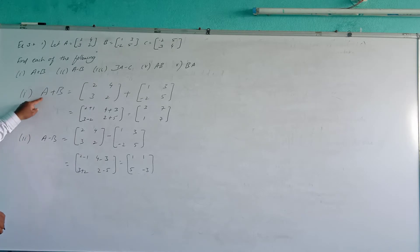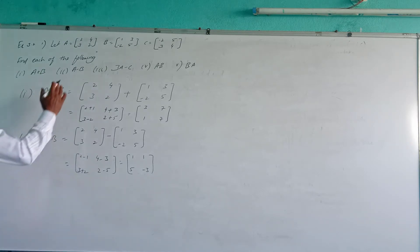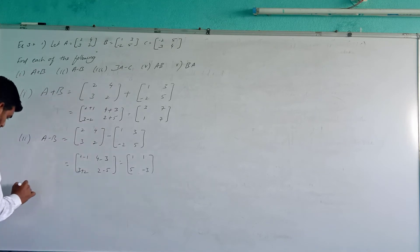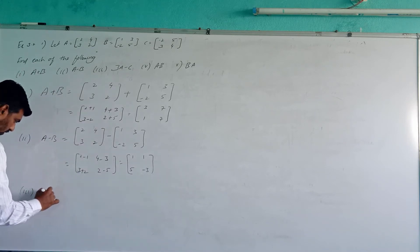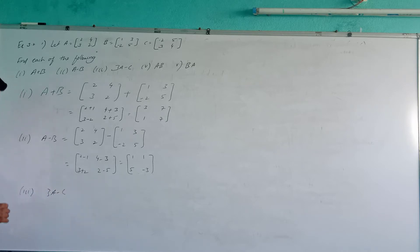That completes A plus B and A minus B — we did direct addition and subtraction there. Now we will find the third one: 3A minus C.